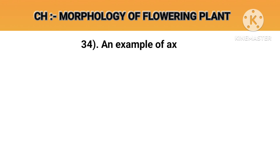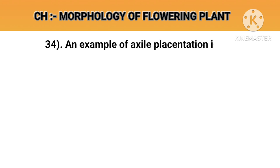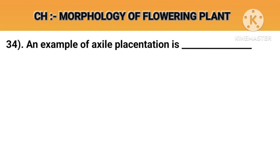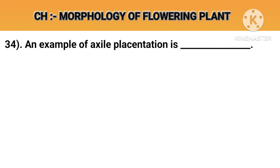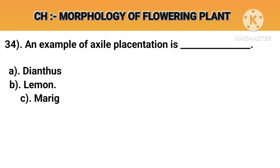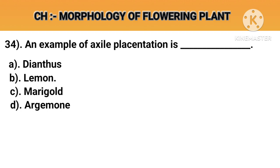Question number 34. An example of axile placentation is. Option A: Dianthus. Option B: Lemon. Option C: Marigold. Option D: Arjman. Answer B: Lemon.